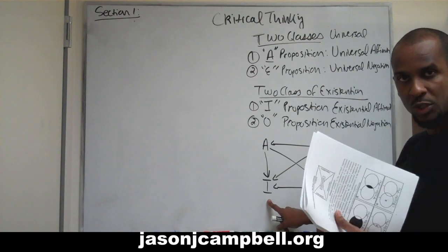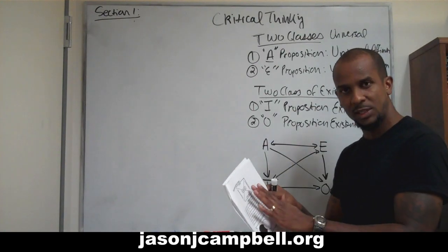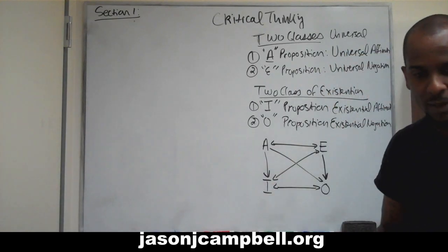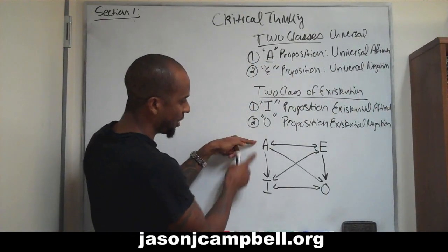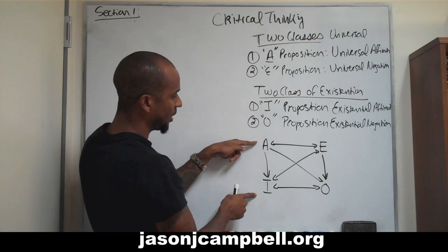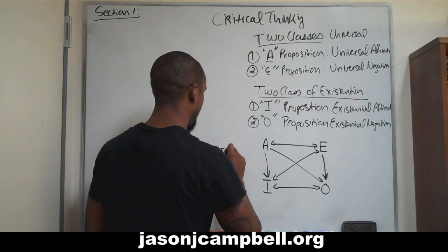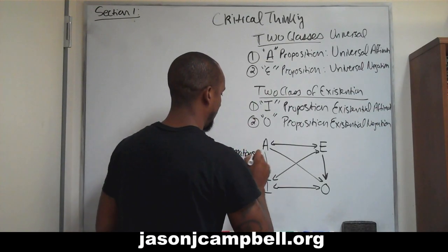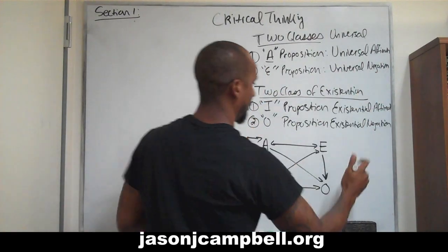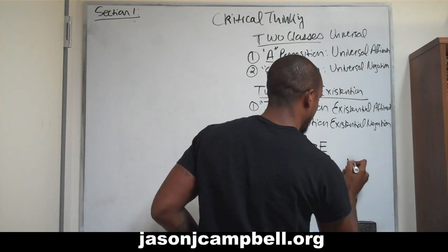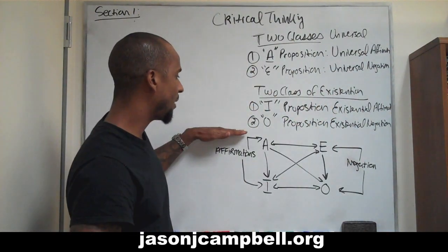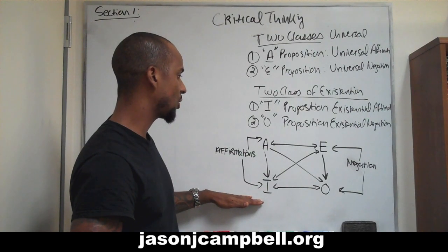That's the only one I'll read — the rest I'll do without notes, to show that once you really get this, you don't need them. We know that A and I are affirmations, while E and O are negations. The top half is universal and the bottom half is existential — so it's easy.